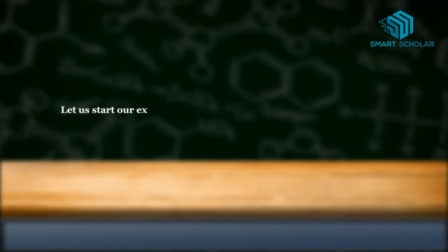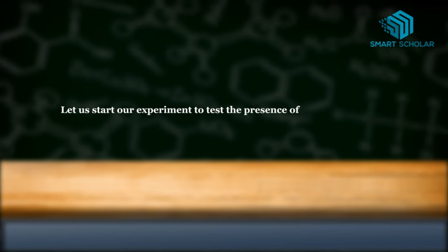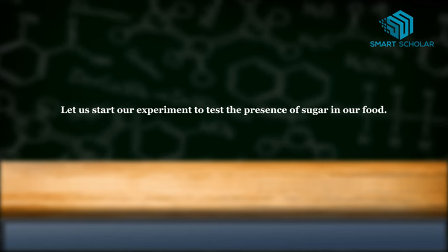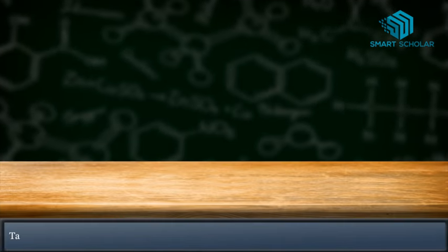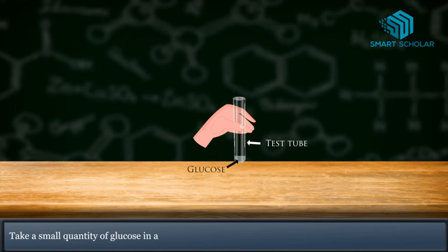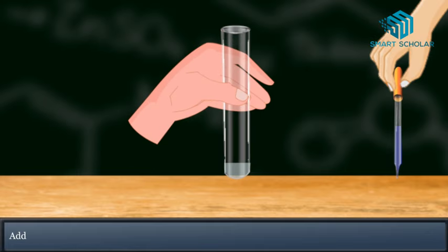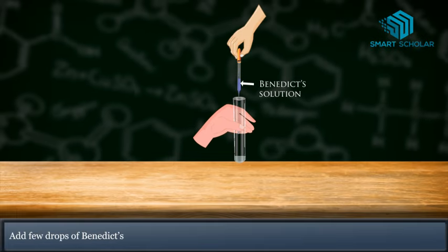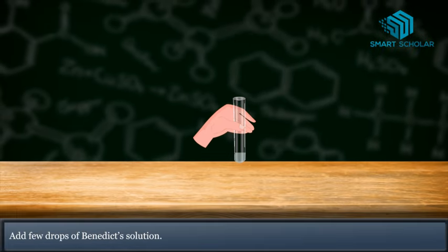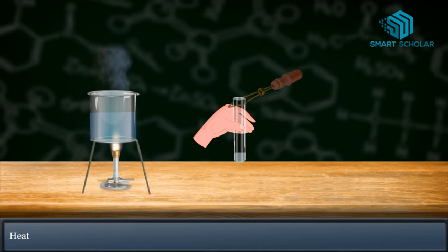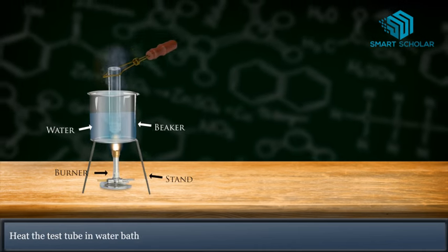Let us start our experiment to test the presence of sugar in food. Take a small quantity of glucose in a test tube. Add a few drops of Benedict solution. Heat the test tube in a water bath.